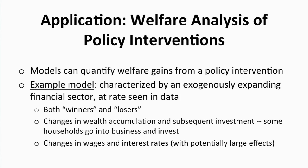So what do we do with these? After we get done looking at the goodness of fit, we can do welfare analysis of policy intervention. The first model has, to make it easier, an exogenously expanding financial sector at exactly the rate we see it in the data. And that's going to create winners or losers. As the financial system expands, we'll get changes on the extensive margin, because some households will go into business. We'll get changes as wealth accumulates in the amount that they can invest in business. And also, because it's a general equilibrium model, we're going to get changes in equilibrium wages and interest rates, which have effects even beyond the direct effects.